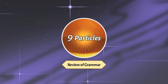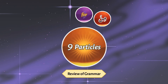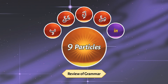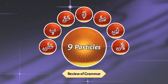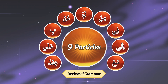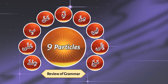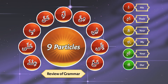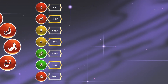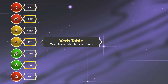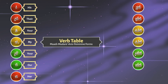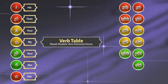We have learned 9 particles, including لا، من، عن، في، على، إلى، and others. Each of these particles was practiced with the pronouns هو، هم، كم، نا، and ذات. We have also learned the whole verb table, starting with فعل ماضي: فعل، فعلا، فعلوا، فعلت، فعلتم، فعلنا — and the مضارع: يفعل، يفعلون، تفعلون، أفعل، نفعل.